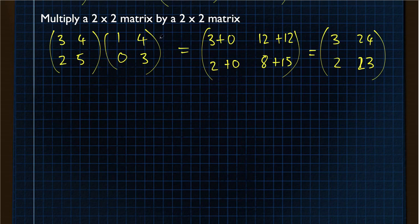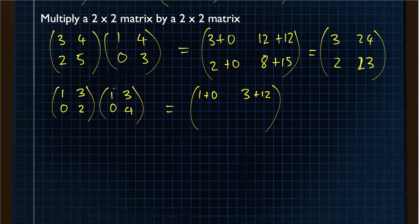That's the result of multiplying those two matrices together. Another example with simpler values, let's have 1, 0, 3, 2 multiplied by 1, 0, 3, 4. That gives us 1 times 1 is 1, 3 times 0 is 0, 1 times 3 is 3, 3 times 4 is 12. Bottom row, 0 times 1 is 0, 2 times 0 is 0, 0 times 3 is 0, 2 times 4 is 8. That gives us 1, 15, 0, 8.